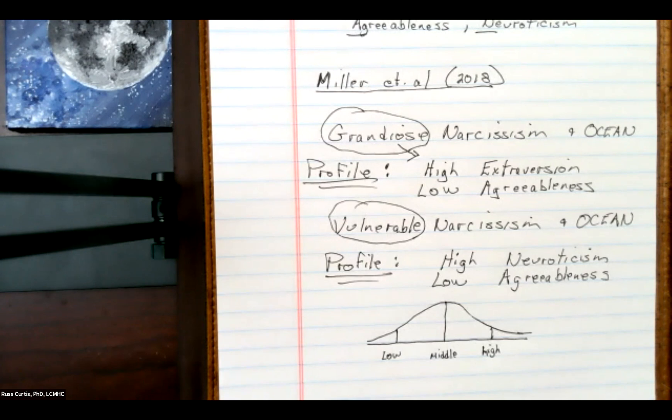So that matches low agreeableness for both of the narcissisms. But then you had the high neuroticism. So experiencing anxiety, anger drives this, depression, and so forth.